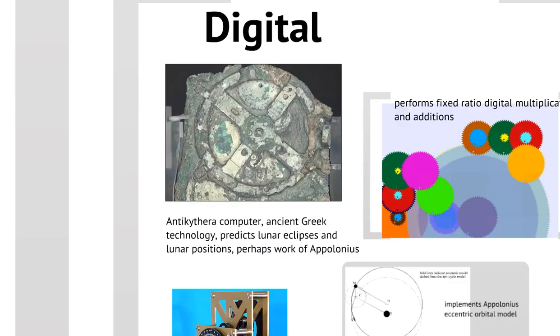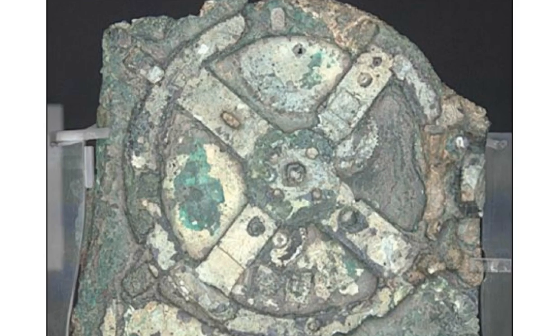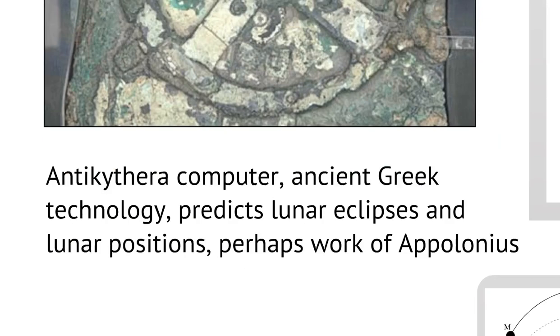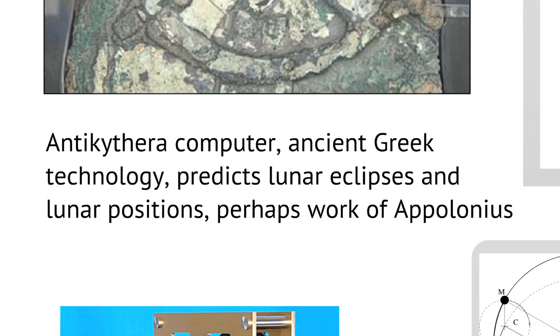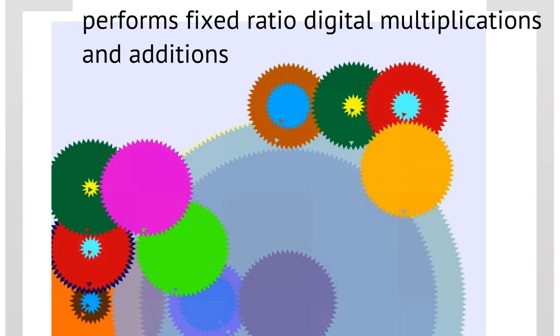And why digital? Well, there were digital machines before. This is the Antikythera mechanism. It was an ancient Greek technology to predict lunar eclipses and lunar positions, probably based on the work of Apollonius. It could perform fixed ratio digital multiplications and additions using cogwheels. Fixed ratio and digital because the cogwheels have discrete positions set by their teeth and fixed ratios of numbers of teeth.